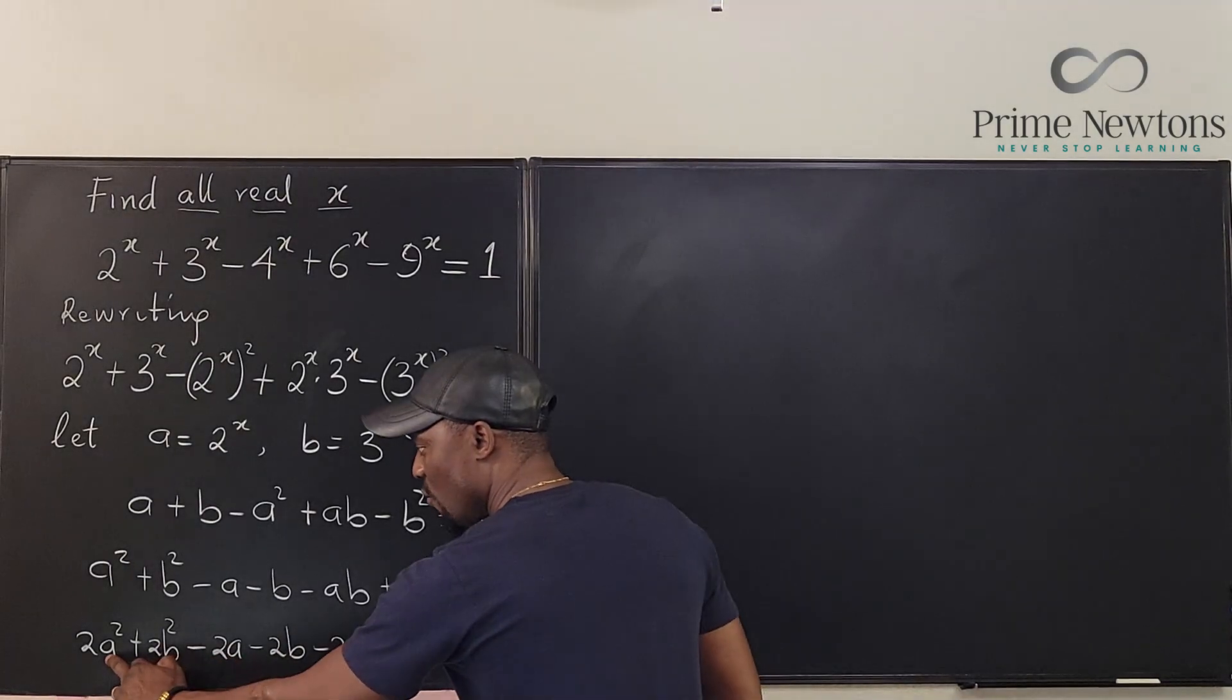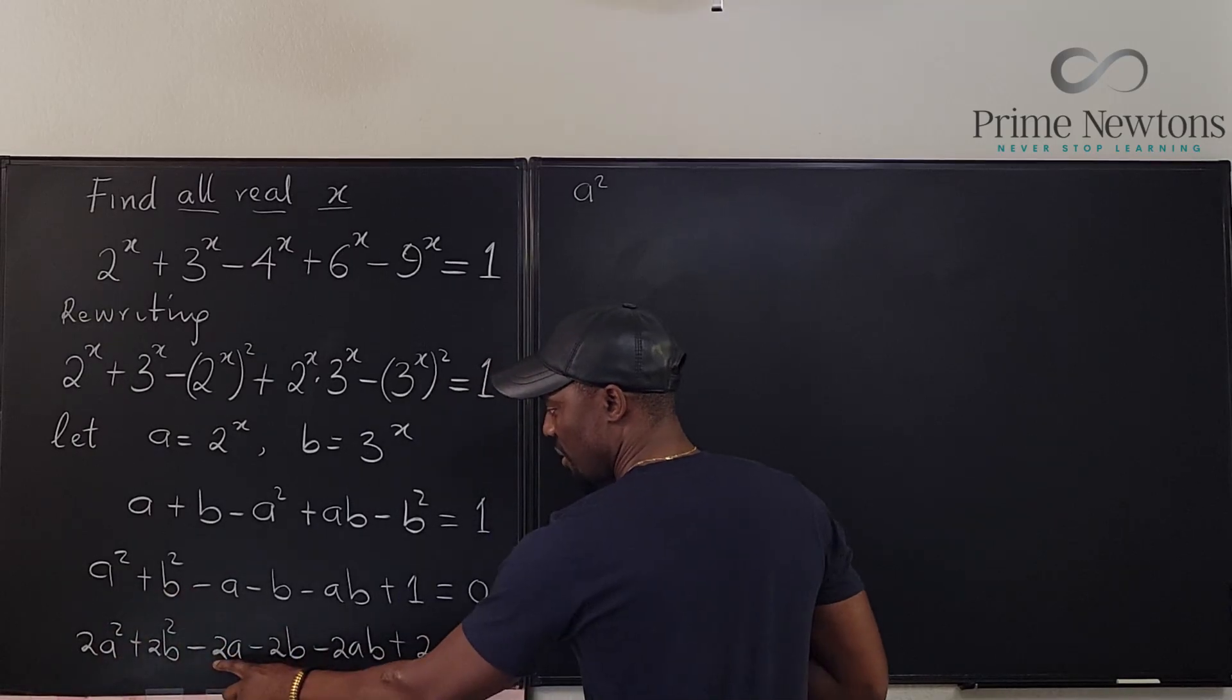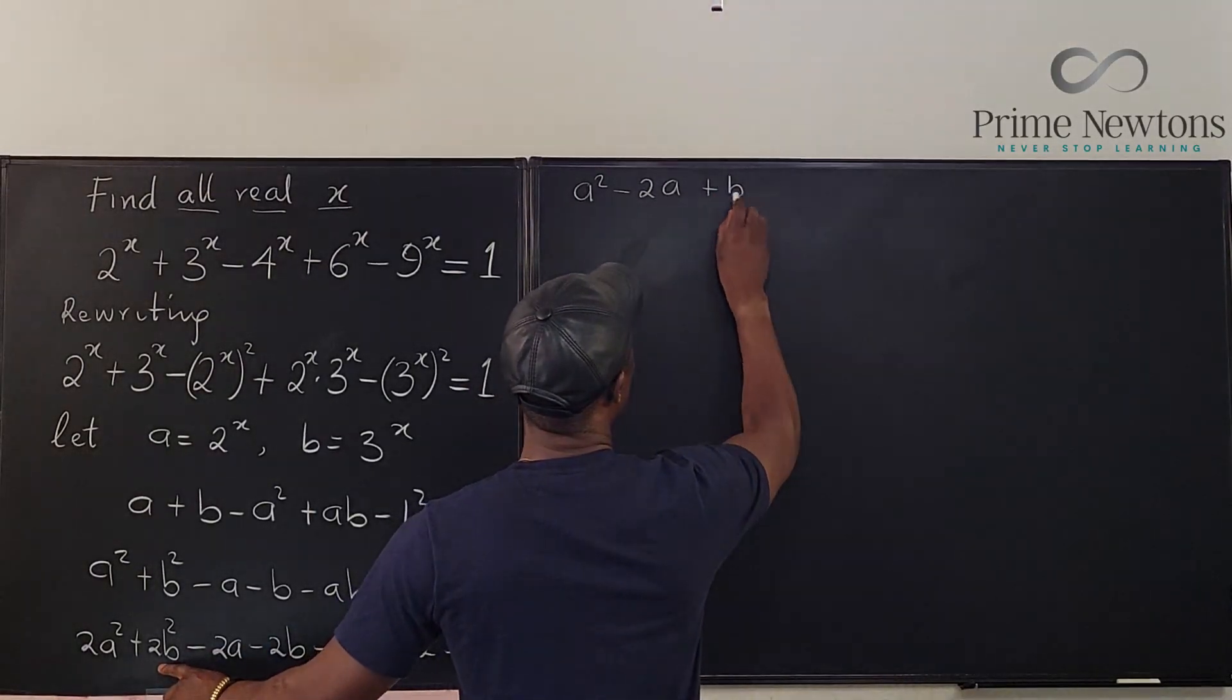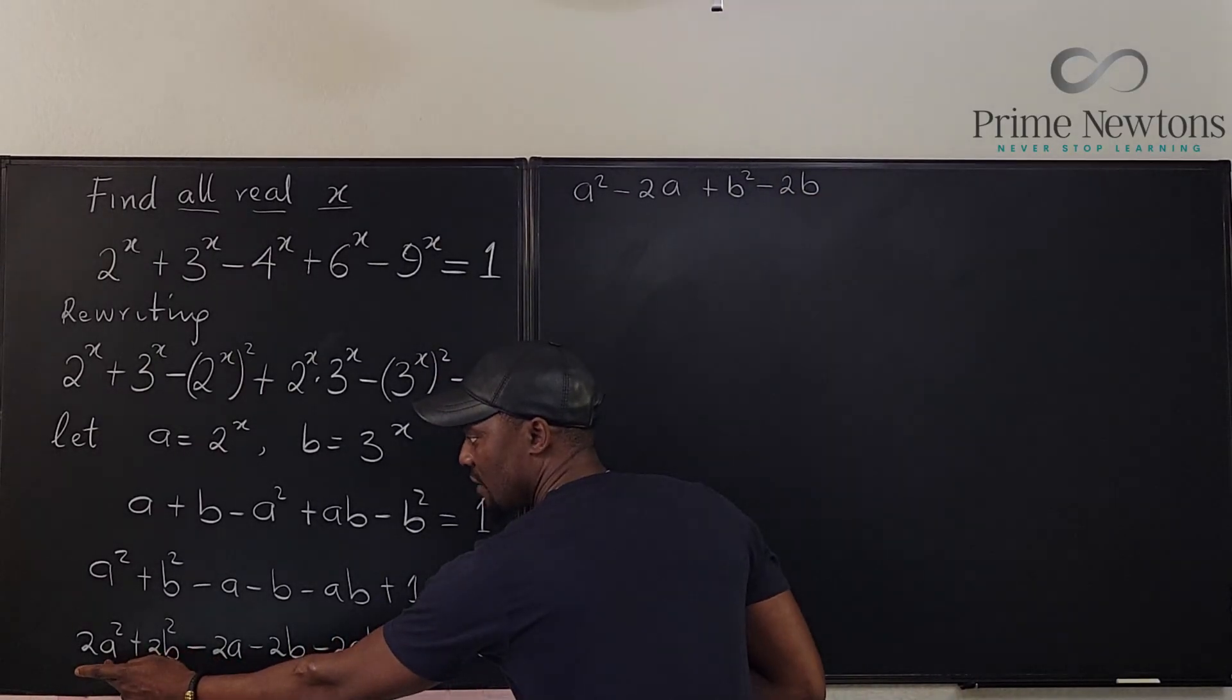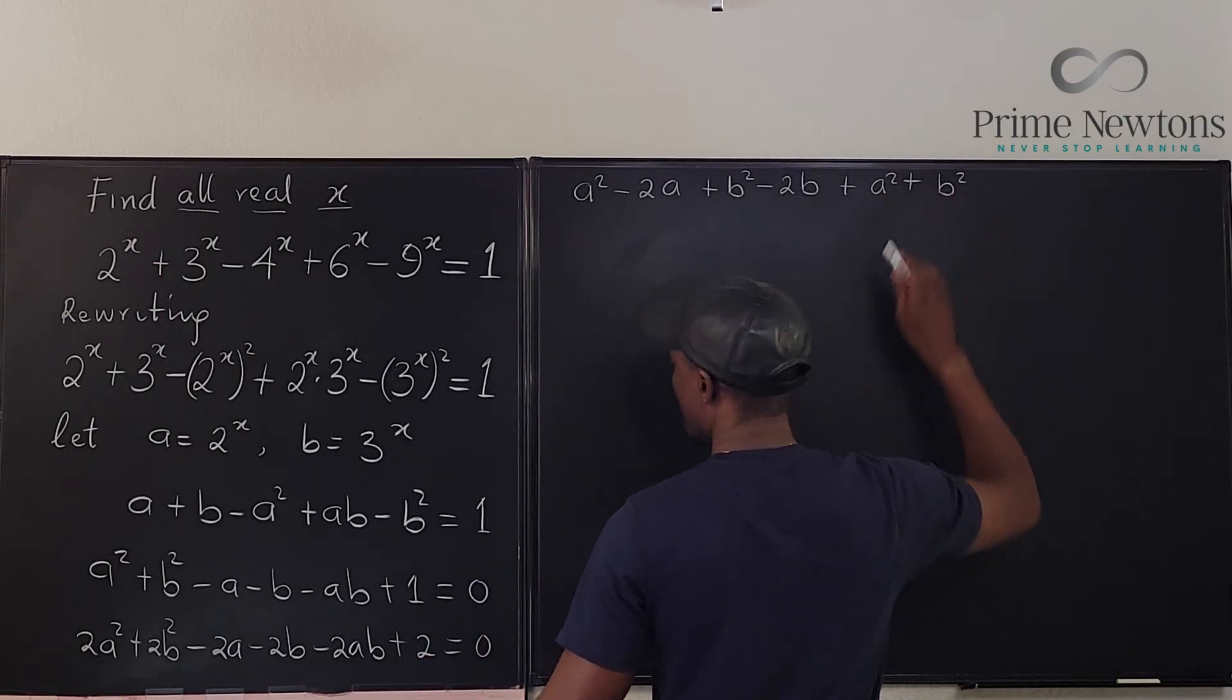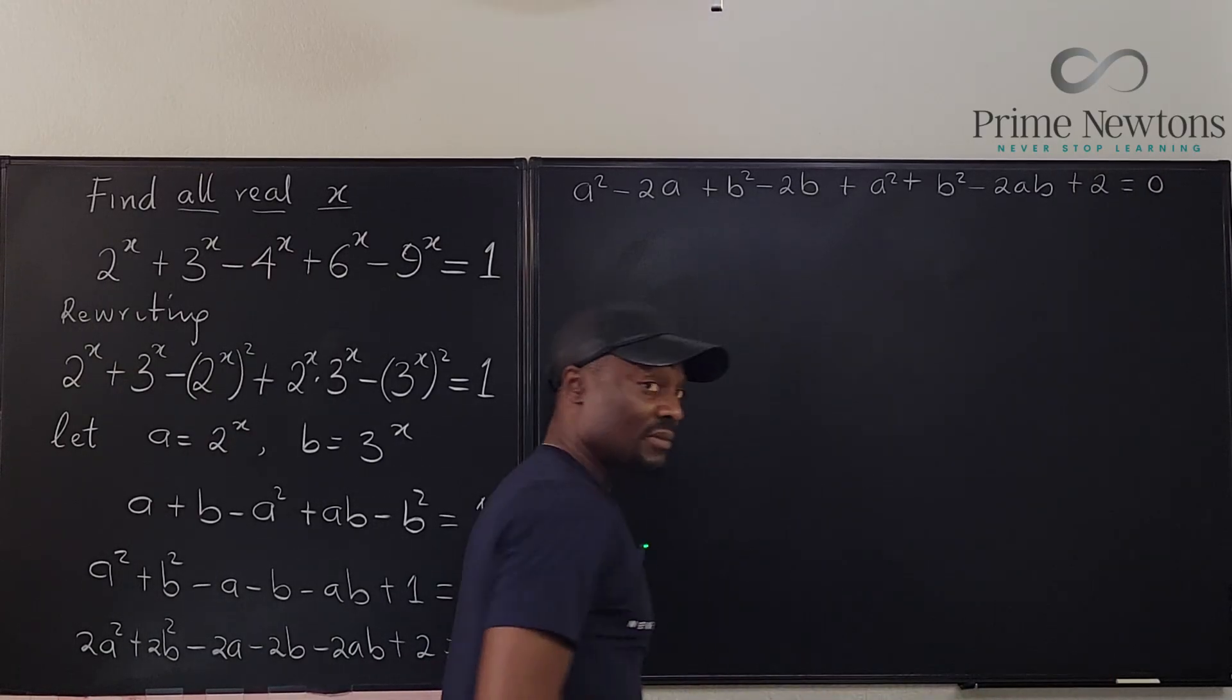Now see how magical this turns out. I'll take one a^2 and combine it with -2a, the beauty of algebra. I'll do the same for b: b^2 combined with -2b. I left one a^2 and one b^2, so I'll use both of them now: a^2 + b^2 - 2ab, and then I have +2 = 0.